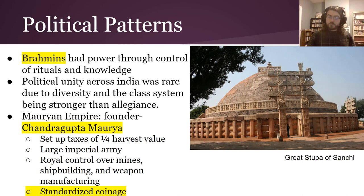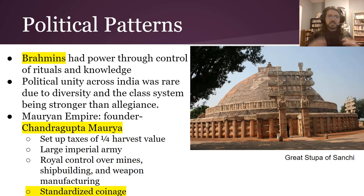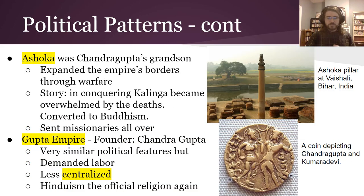Under the Mauryan Empire — one of those examples of unity — they set up taxes that took one-fourth of all the harvest, and used that to pay an army, enact control over mines, shipbuilding, and weapons manufacturing, and to keep all the other little rulers in line. They also set up standardized coinage. And Ashoka, who was Chandragupta's grandson, expanded the borders immensely and set up pillars with proclamations and rules on them — you might think that's similar to Hammurabi's Code, and you would be right.